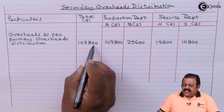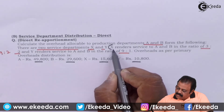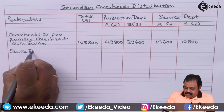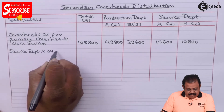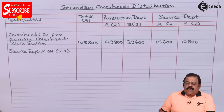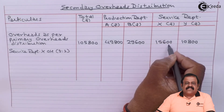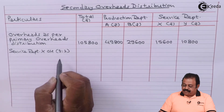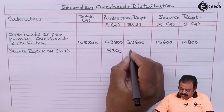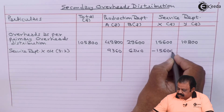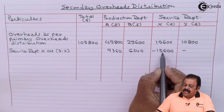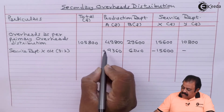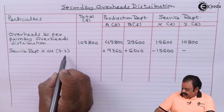Total overheads are 1,05,800. X renders service to A and B departments in the ratio of 3 to 2. So, the amount of overheads of X Department — 15,600 — will be reapportioned between Department A and B in the ratio of 3 to 2. This amount will be subtracted from the column of X, minus 15,600, and added to Department A and B in the ratio of 3 to 2.